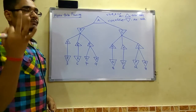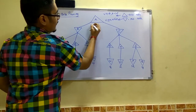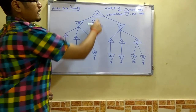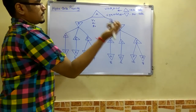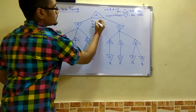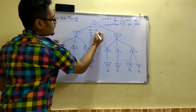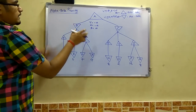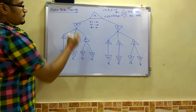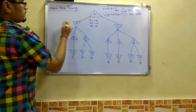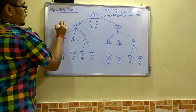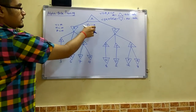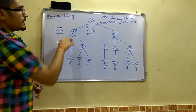In alpha-beta pruning we have three main values: V, alpha, and beta. For a maximizer node, V takes the lowest possible value which is minus infinity. Alpha also starts at minus infinity and beta starts at positive infinity. Moving to the left branch, at the minimizer node here, V is initialized to positive infinity, while the value of alpha and beta remains the same — only V changes for each maximizer or minimizer node.